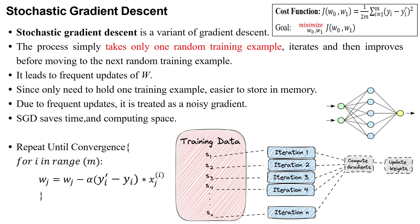The second gradient descent optimization method is Stochastic Gradient Descent (SGD), which is one of the small variants of batch gradient descent. Batch gradient descent reduces the cost created by a neural network by minimizing the loss function for the network with respect to its parameters. In stochastic gradient descent, only a single sample is taken randomly from the given dataset for each iteration.